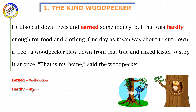They also cut down trees to earn some money. Every day, Kisaan would find a small nest in the trees. His name is Woodpecker — the bird is called Woodpecker. One day, Kisaan was about to cut down a tree, when a woodpecker flew down from the tree and asked Kisaan to stop at once.